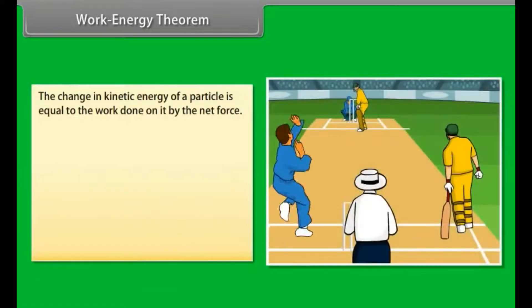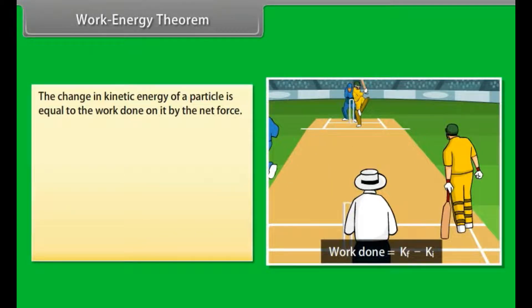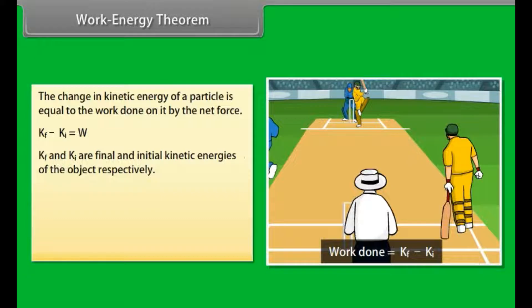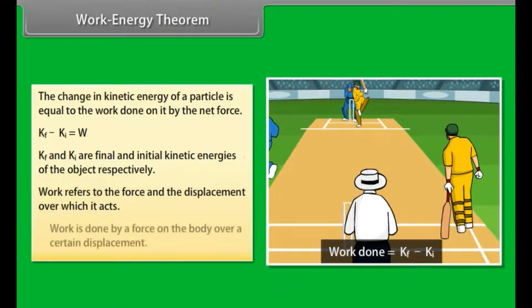Work energy theorem. The change in kinetic energy of a particle is equal to the work done on it by the net force. Kf - Ki = W. Here Kf and Ki are final and initial kinetic energies of the object respectively. Work refers to the force and the displacement over which it acts. Work is done by a force on the body over a certain displacement.